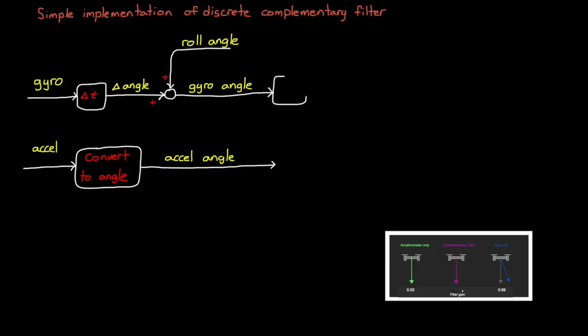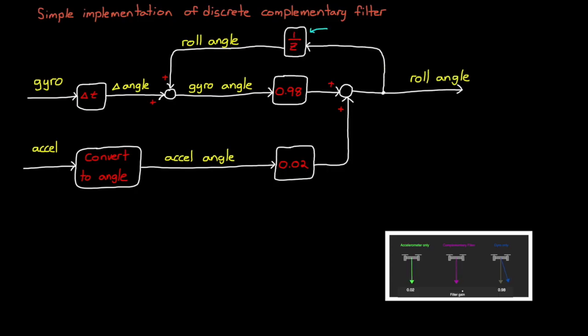We can combine these two angles by taking a fixed fraction of one and the complementary fraction of the other. So for example we may take 98% of the gyro measurement and add that to 2% of the accel measurement so that ever so slightly we're nudging the gyro angle in the acceleration direction.